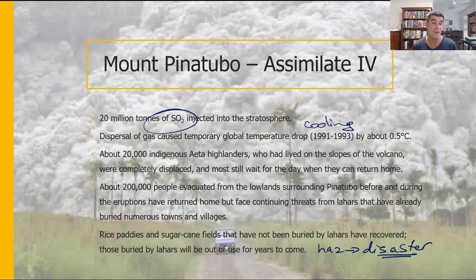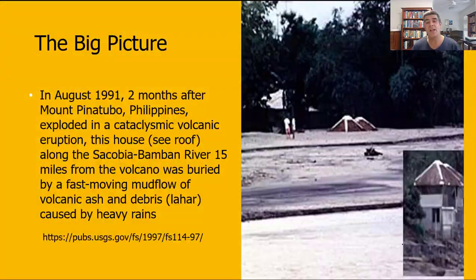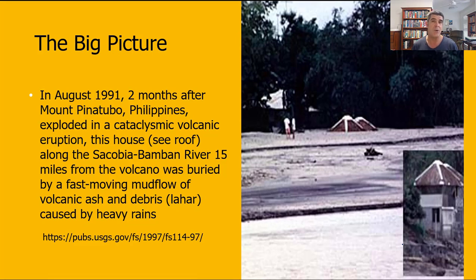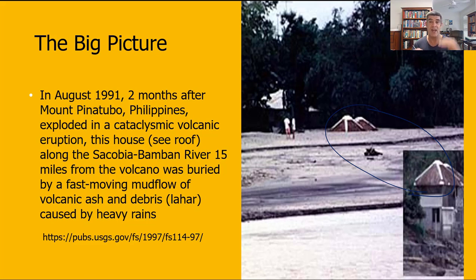Rice paddies and cane fields not buried by lahars have recovered, but those that were hit will be out of use for years to come. This is where we see the hazard slipping back into the disaster zone — it's not just about human life, which was well preserved, but also about the speed of recovery. This picture gives a sense of how devastating lahars can be: two months after the eruption, rains picked up settled ash and created mudflows that buried houses so deep you could only just see the rooftops.